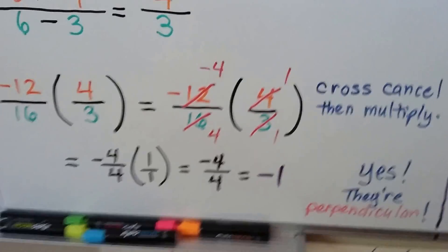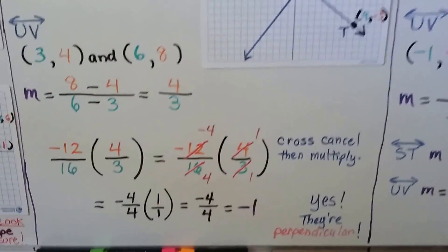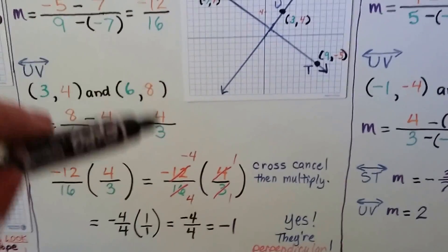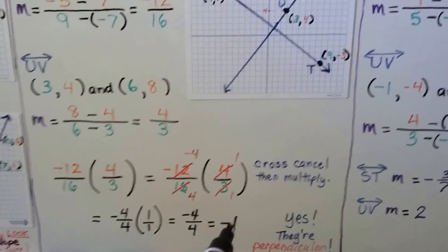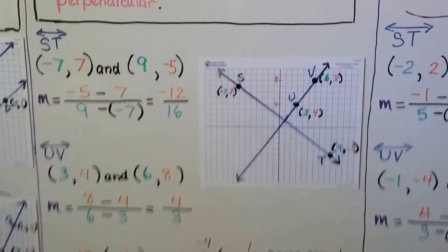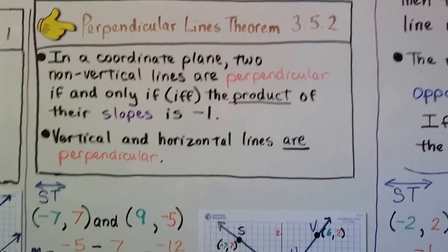We multiply them together, we get -4/4 and it equals -1. So yes, they're perpendicular. It worked out algebraically.